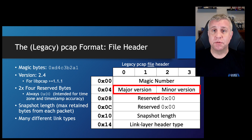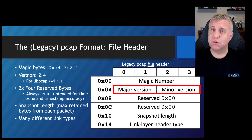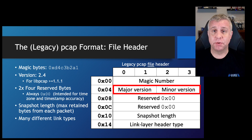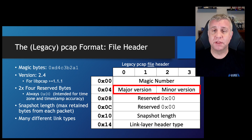The next two values are going to be a version number, and this is going to refer to the PCAP file format specification of what you're looking at in this particular file. Long ago this was a lot more relevant, but nowadays you're going to see everything is version 2.4, because that spec has been around since libpcap version 1.1.1. This is already established as part of the file format, so all of your legacy PCAP files are going to be 2.4.